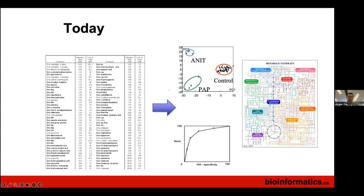From tables or peak lists, how do we get patterns and biomarkers? That's what we'll cover in this session. In Module 6 we'll focus on how to go from significant compounds or peaks to biological functions. These two modules cover that journey.